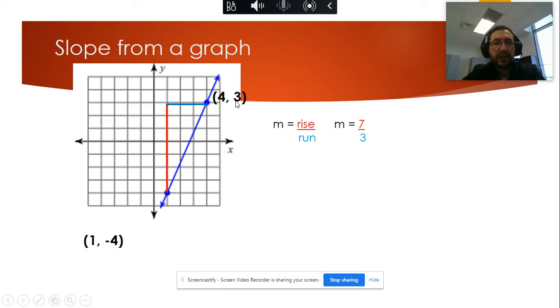Or another way to find the slope is using the two points, (4, 3) and (1, -4), two points that are on the edge. And then use the two-point formula. But before you use the two-point formula, we need to label it: X sub 1, which is X of the first point, Y of the first point, X of the second point, Y of the second point.